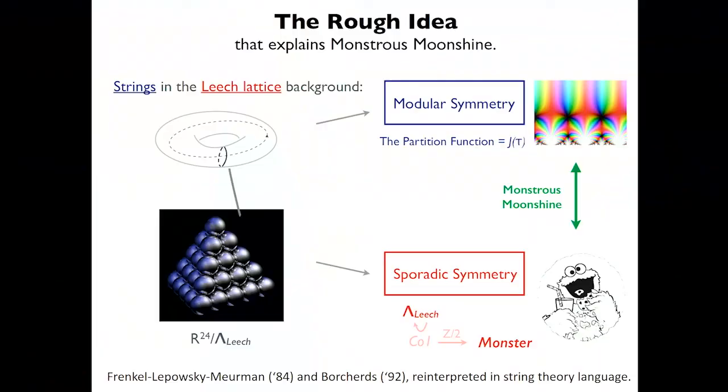This was done beautifully by Frenkel, Lepowsky, and Meurman — three mathematicians — in the 80s, and later proven using modular form techniques and vertex operator algebra in 1992. Their mathematical work led to a lot of development and progress in physics. It's a beautiful example of how different disciplines can help each other in very unexpected ways — and also helped Borcherds receive a Fields Medal.